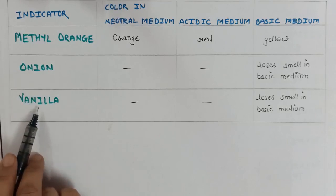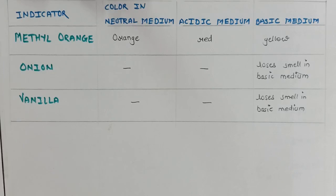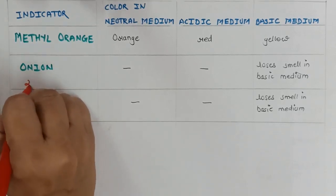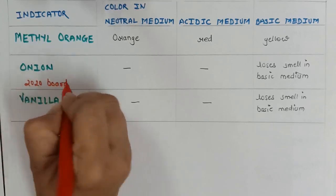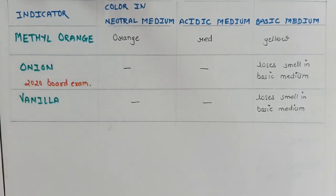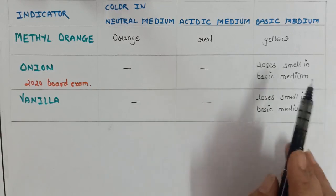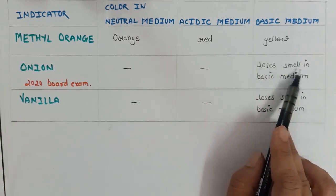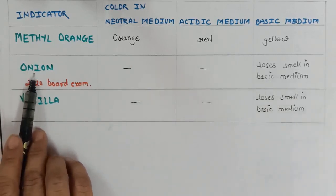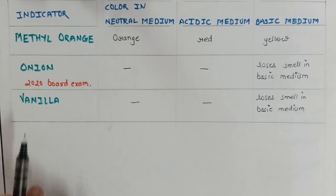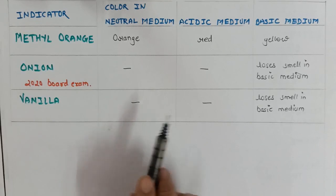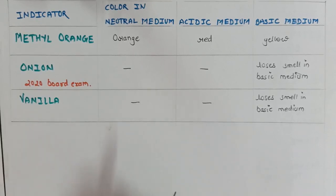Onion and vanilla are olfactory indicators. A question was asked in the 2020 board exams: identify the type of indicator — onion. The answer is: it is an olfactory indicator. Onion does not change its odor in neutral or acidic medium, but it loses its smell in basic medium, and therefore it is also a kind of basic indicator — though in board exams, you should write the answer as 'olfactory.' Similarly, vanilla essence does not change its odor in neutral or acidic medium, but loses its smell in basic medium, so vanilla is also a basic indicator.